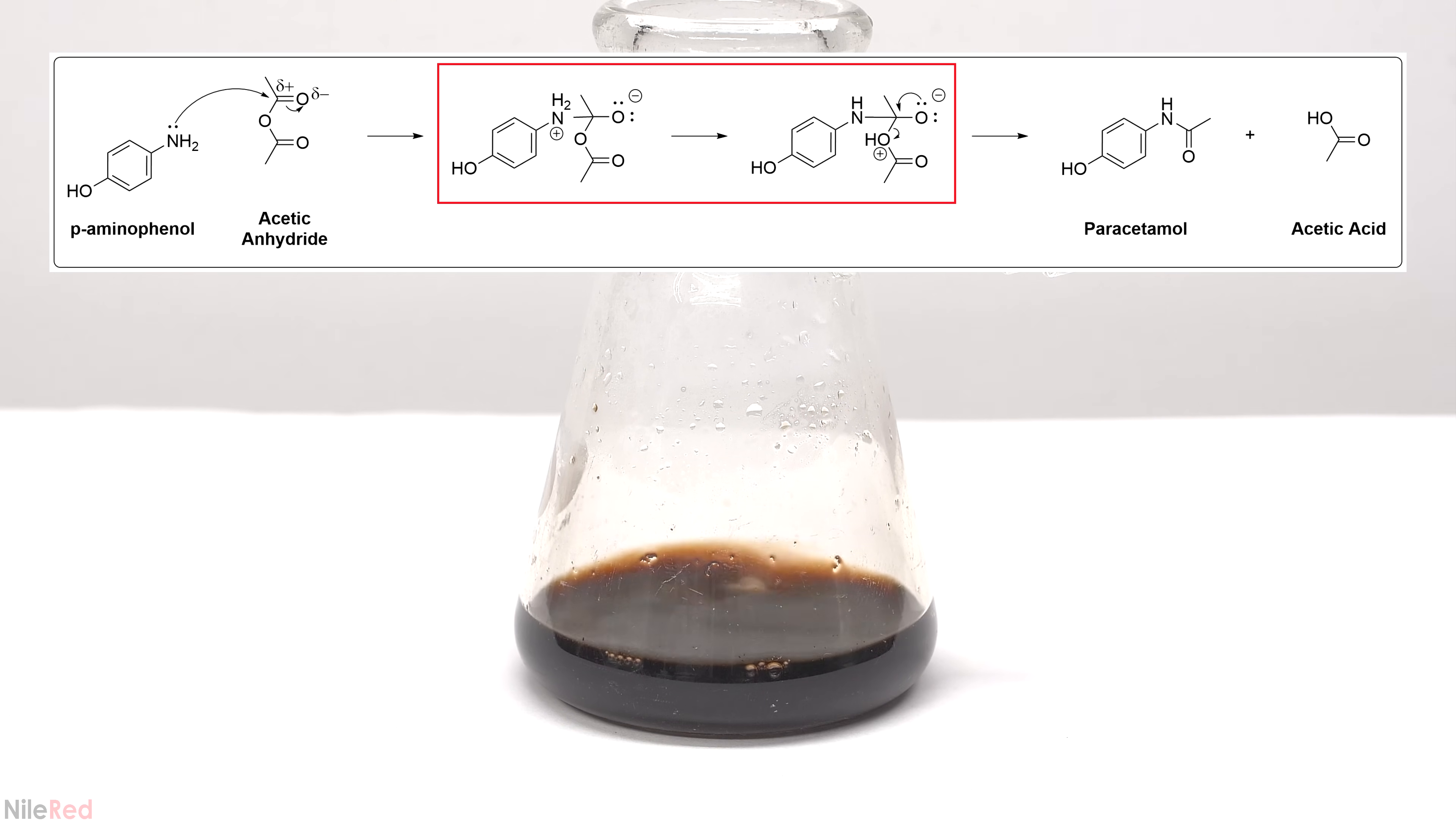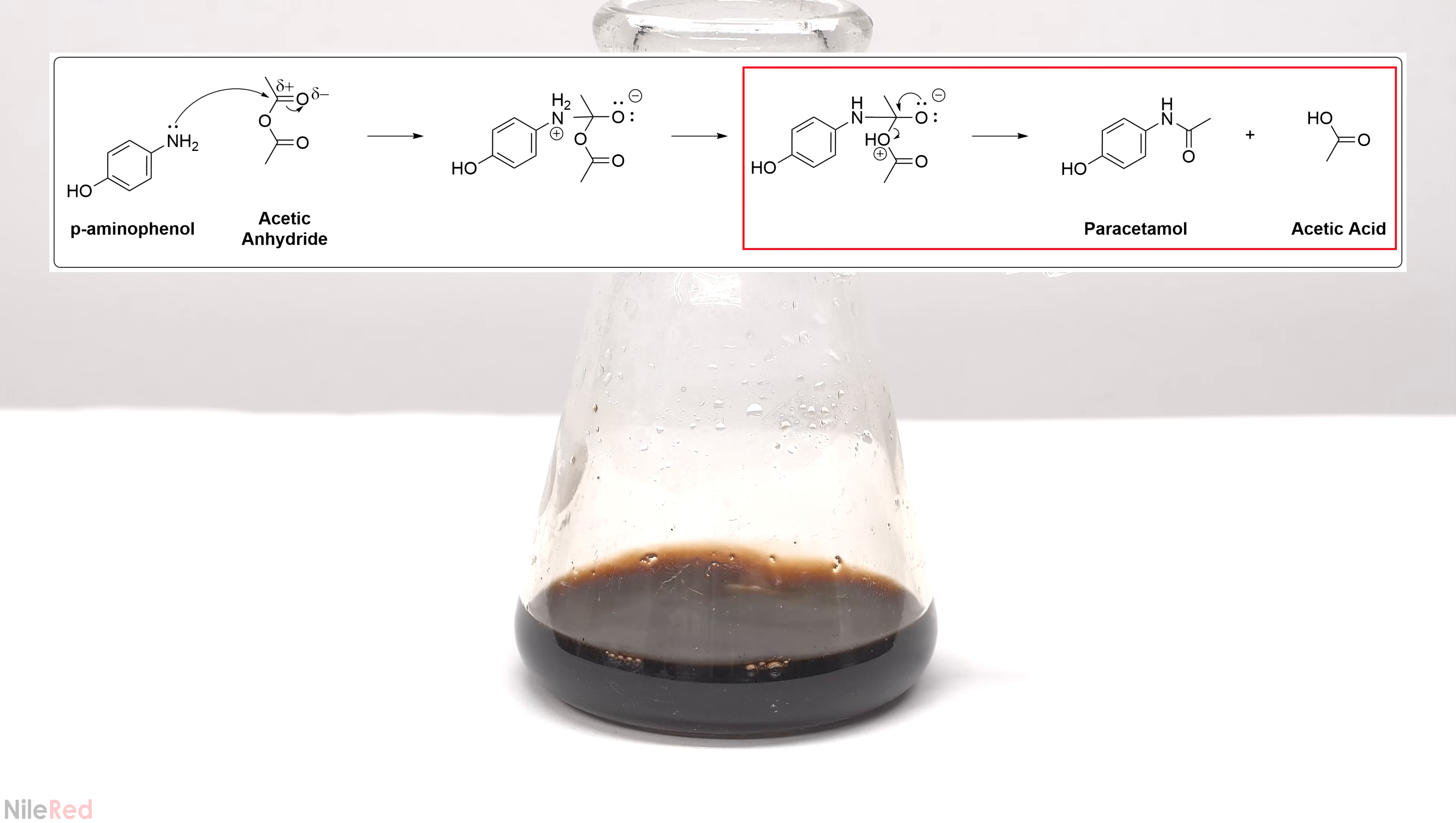The proton from the nitrogen is then intermolecularly transferred to the oxygen. Electrons on the negatively charged oxygen then move to reform the carbonyl. A carbon-oxygen bond is broken, which leads to the formation of the final paracetamol as well as a molecule of acetic acid.